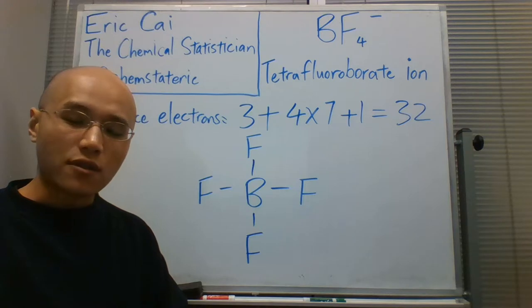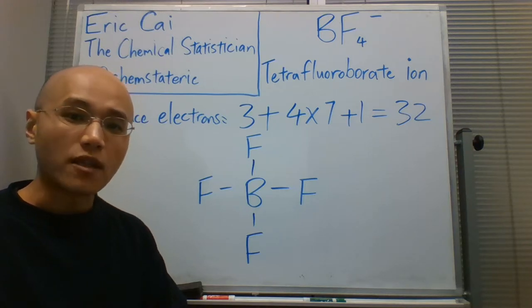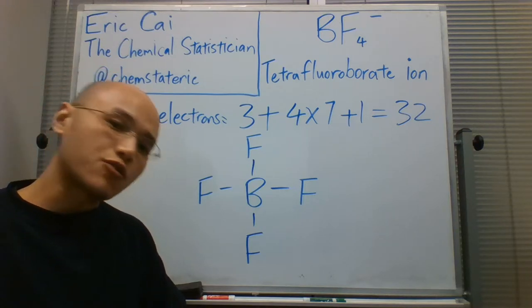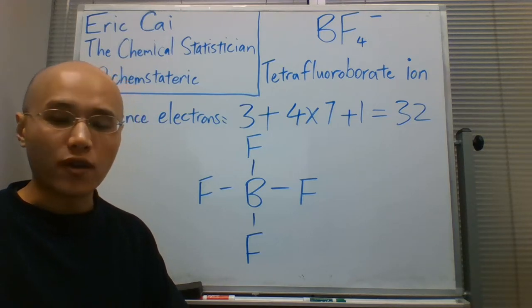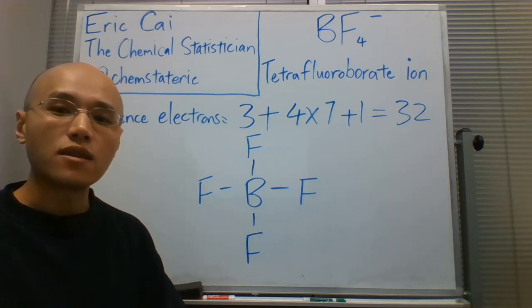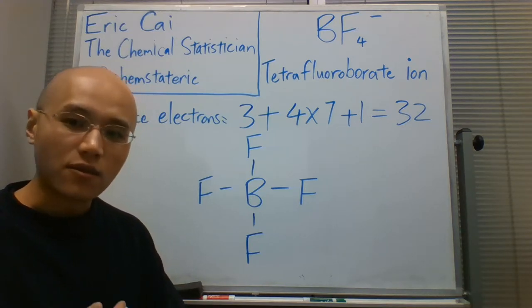That takes away eight electrons, so we have 24 left. At this point, I encourage you to distribute them to the more electronegative atoms in the periphery. This is not always true, but it's a good idea to begin with this assumption.